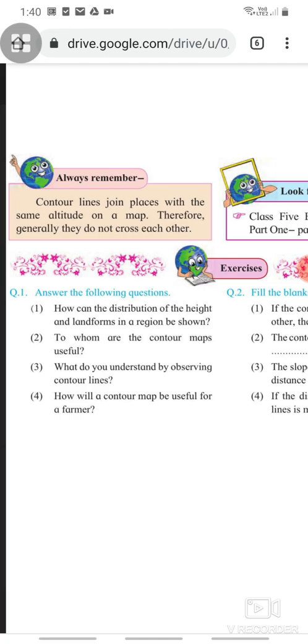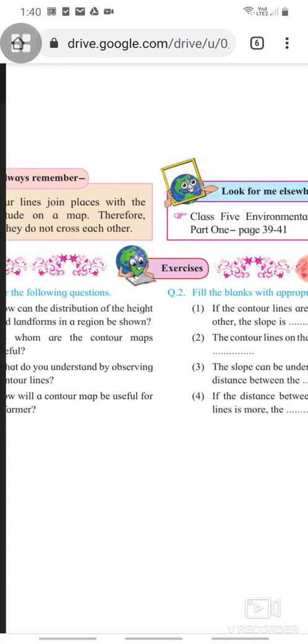Coming to the exercise. Question 1 is to answer the questions. First part is, how can the distribution of the height and landforms in a region be shown? Second, to whom are the contour maps useful? Third, what do you understand by observing contour lines? And the last is, how will a contour map be useful for a farmer?